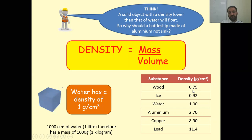Here are the densities of different substances: wood is 0.75 grams per centimeter cube, ice is 0.92, water is 1, aluminum is 2, copper is 8, and lead is 11.8. Ice and wood both have density less than water, so they float. Aluminum, copper, and lead have density greater than water, so they always sink.